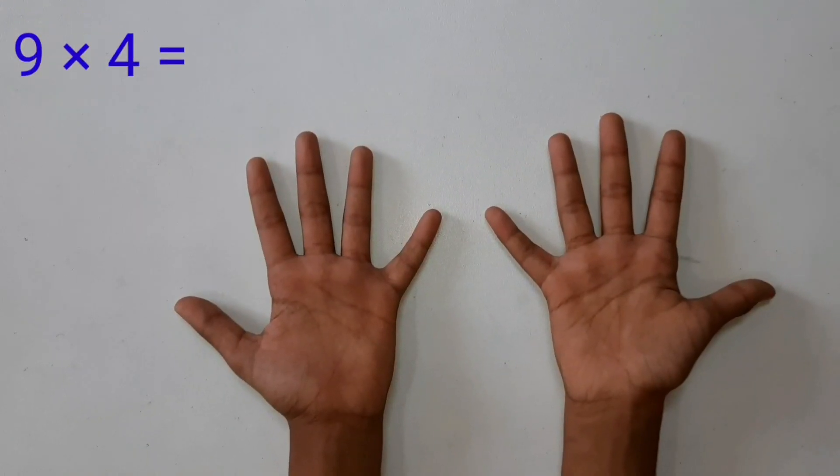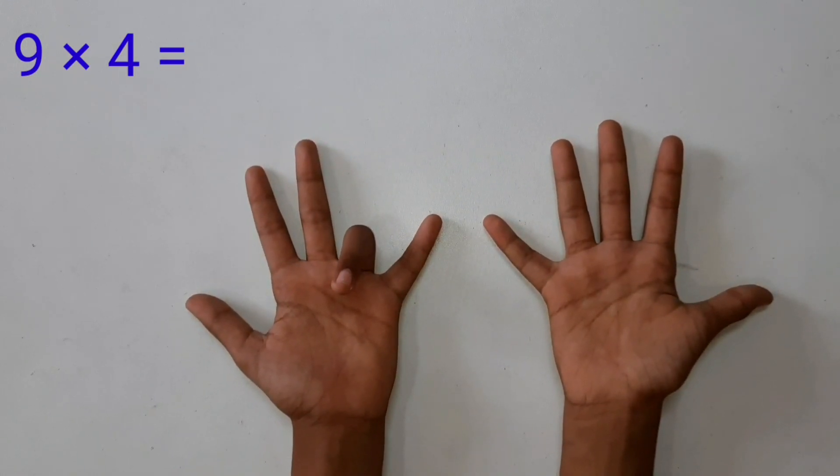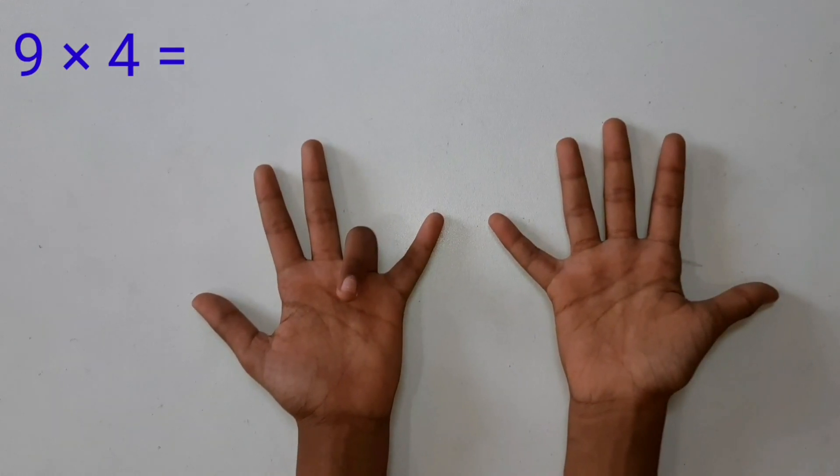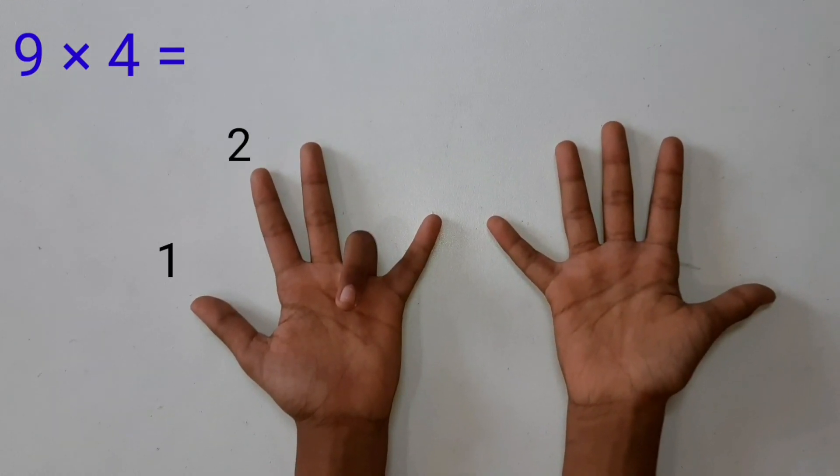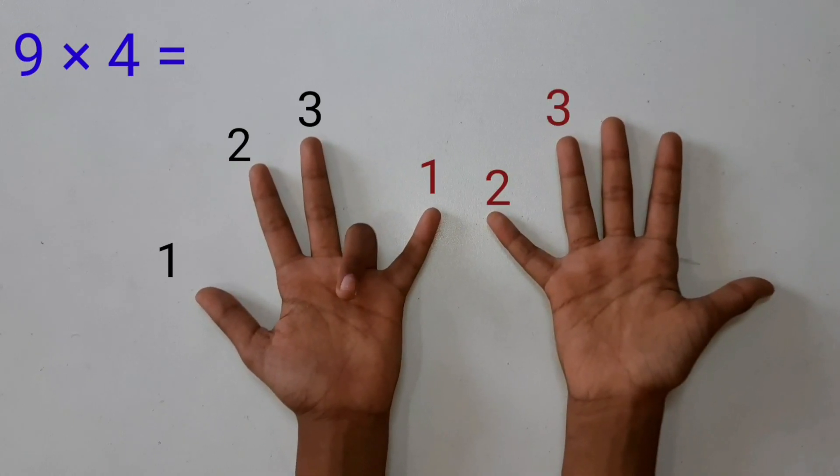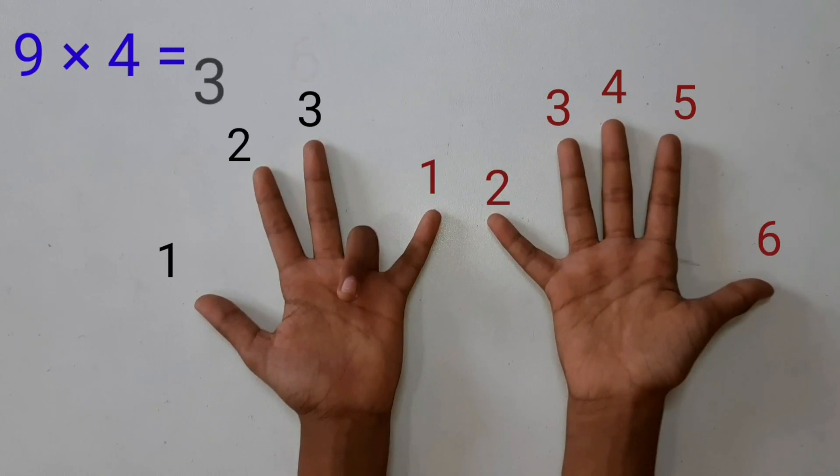Let's solve 9×4. First, close the fourth finger. Next, count fingers up before the closed finger and after the closed finger. Here, 3 fingers up before the closed finger and 6 fingers up after the closed finger. So, the answer is 36.